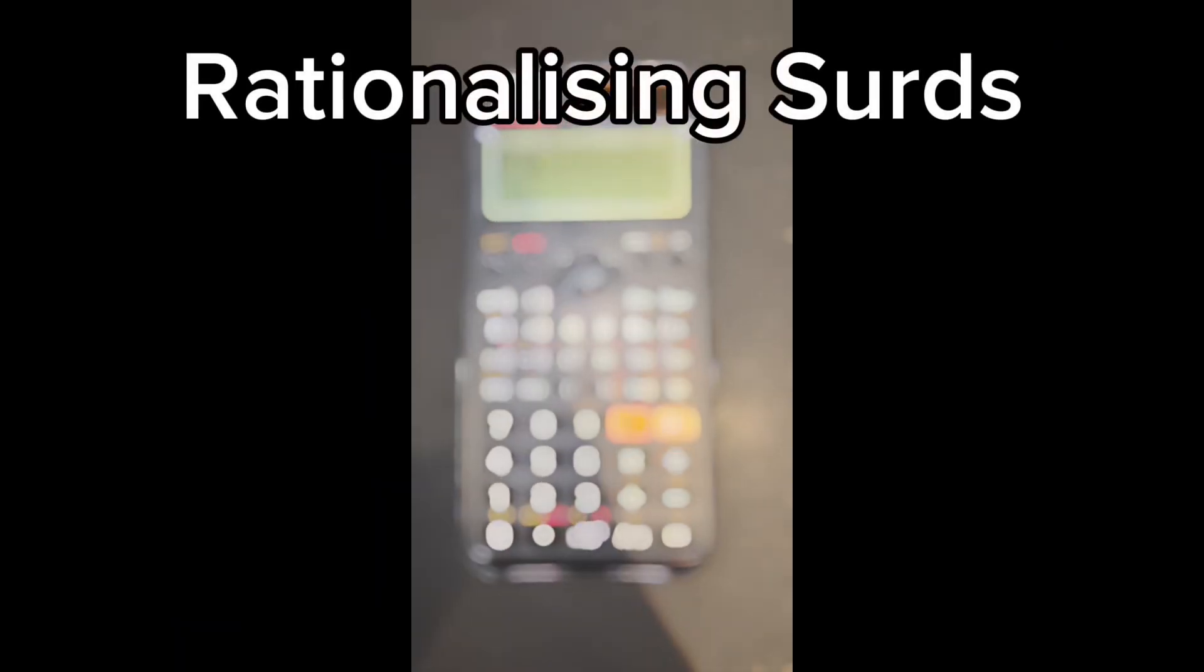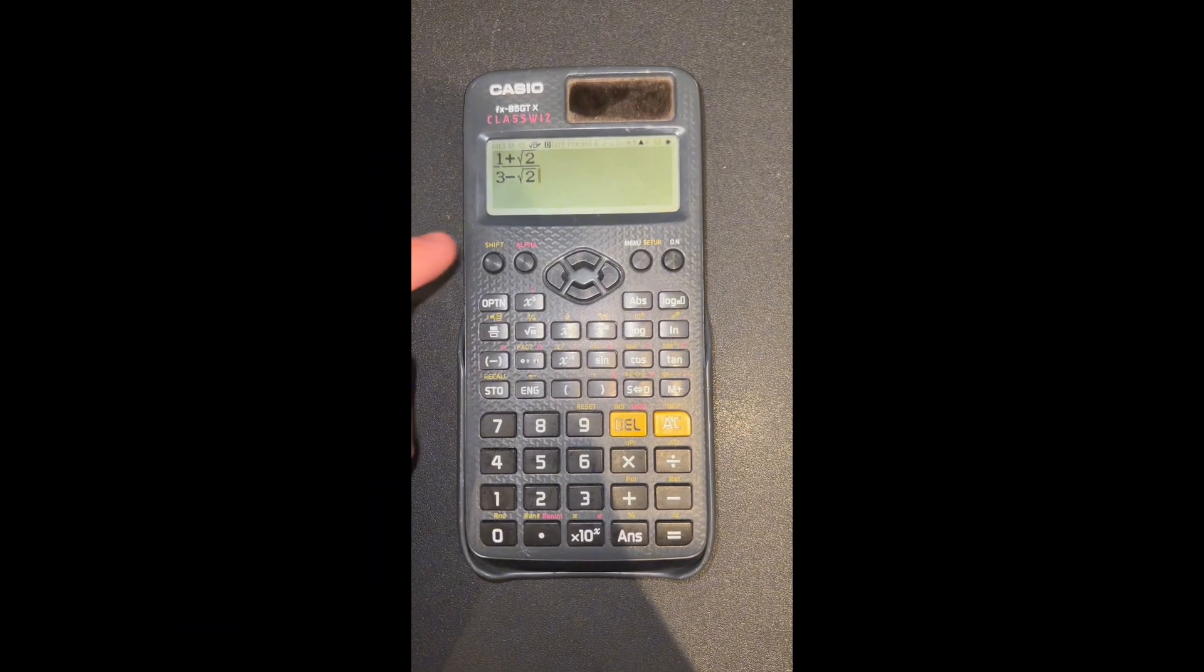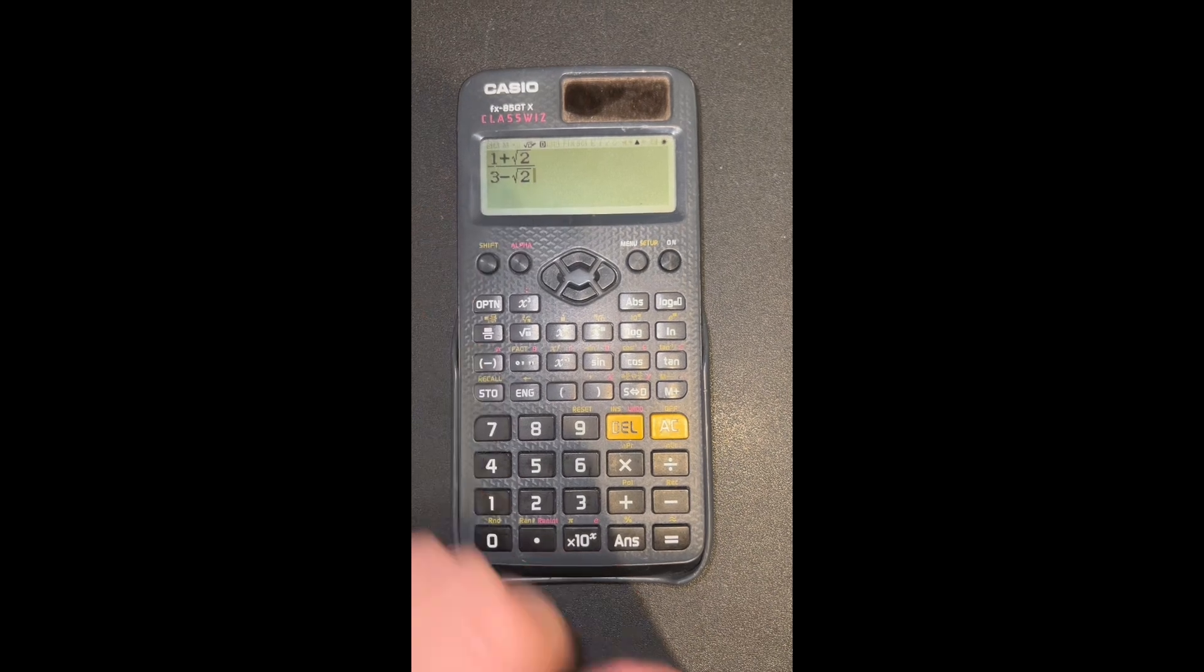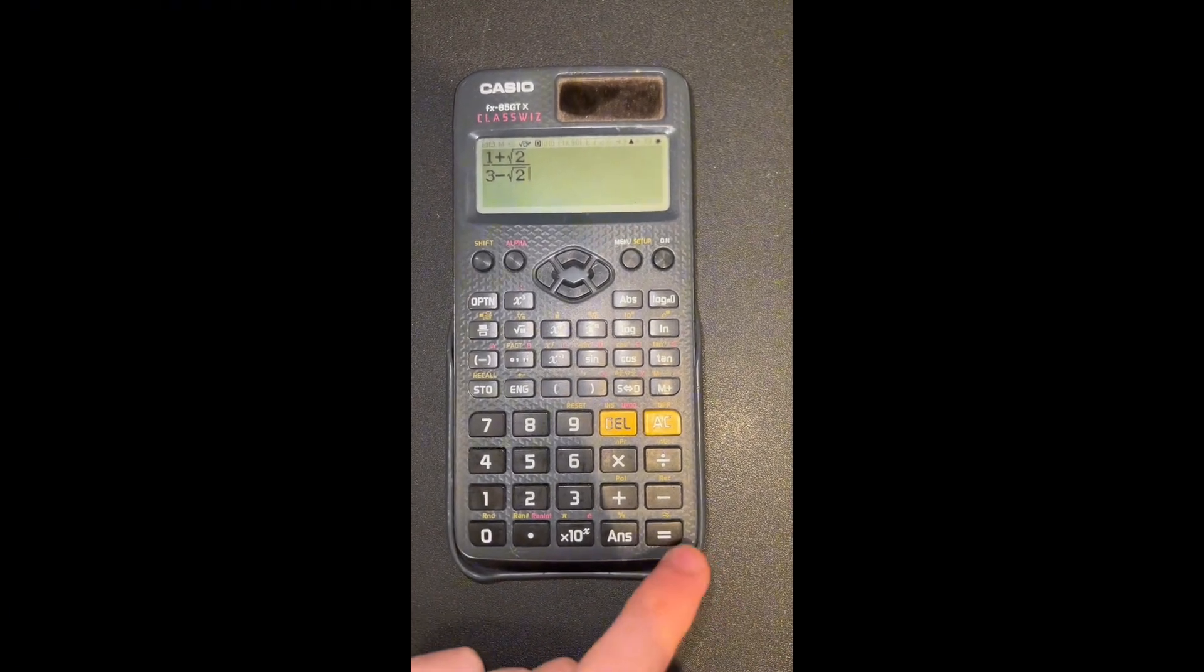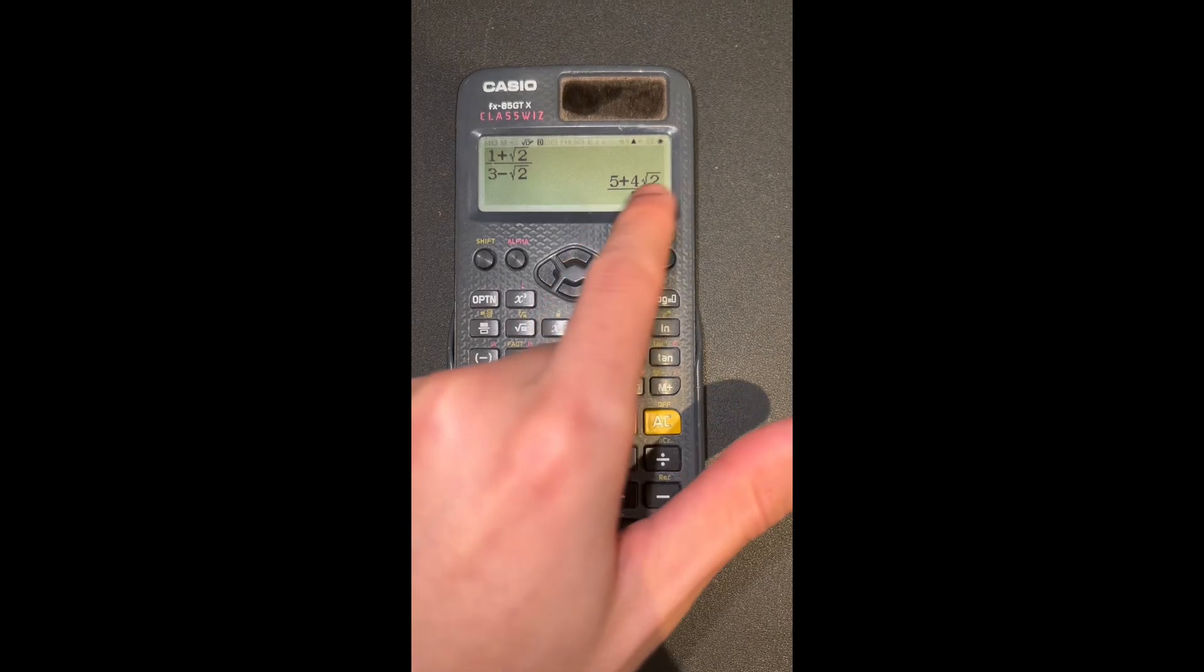The next thing I'll show you is how you can rationalize surds with your calculator. This one's really easy. You just type it into your calculator, then press the equals button, and here you go. There's the rationalized version.